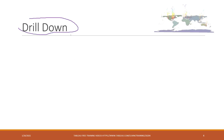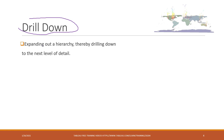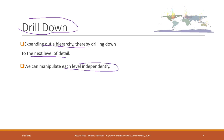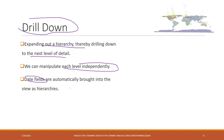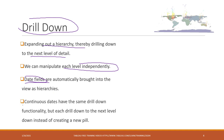Tableau also has a drill-down function — if we create a hierarchy, we can expand it to drill down into the next level of detail, which is very useful especially when there is a hierarchy in your data structure like state, county, etc. We can also manipulate each level independently. Date fields are automatically considered hierarchy data and also considered dimensions.